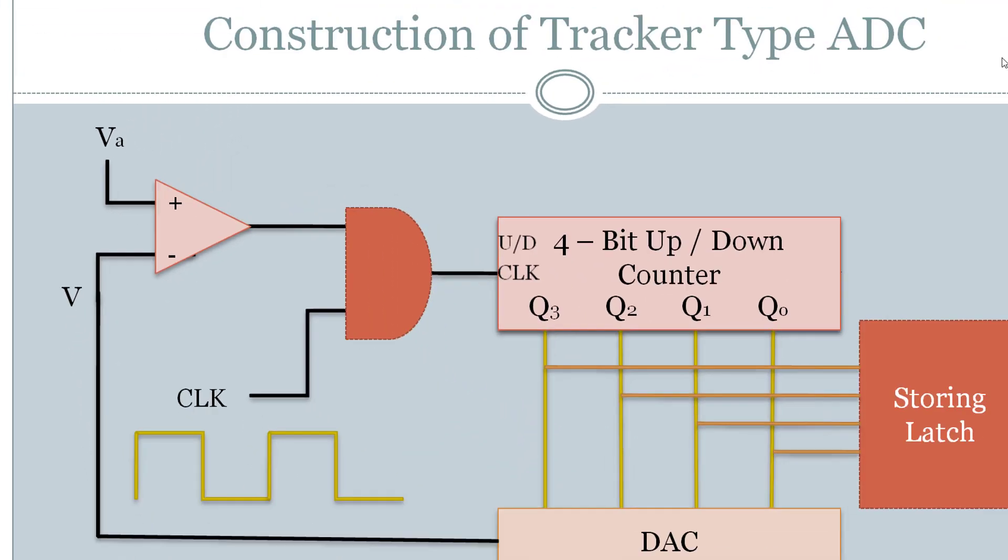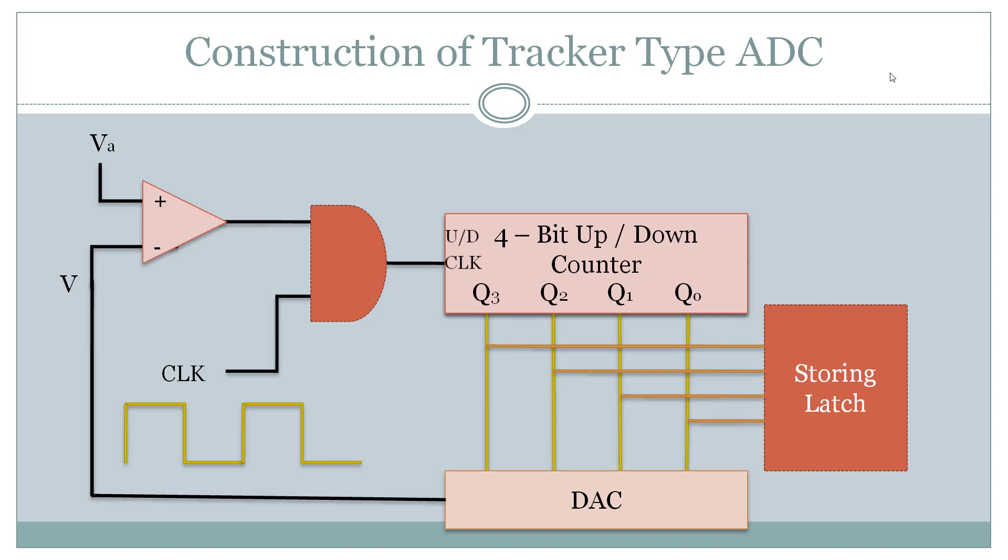The clock input can now be directly given to the counter. So these are some changes which can be made in simple counter type to make a tracker type. The functions and requirements of the other components are the same as that in the simple counter ADC.